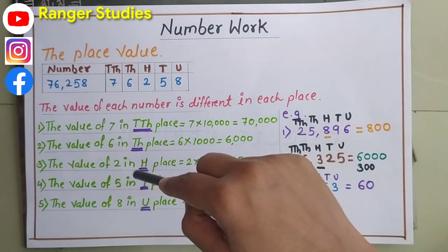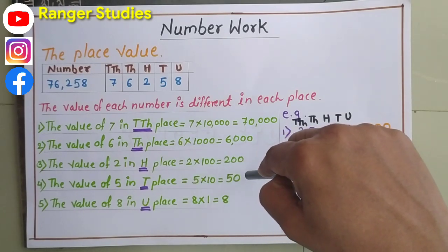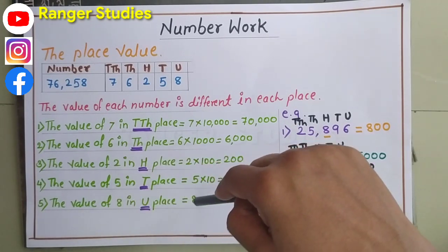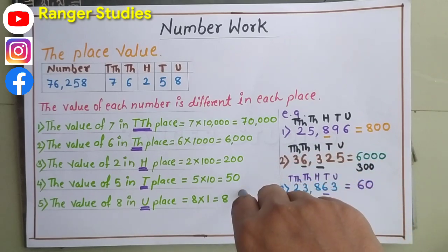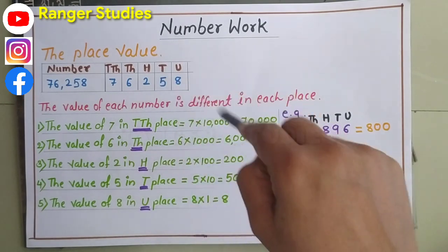The value of 5 in ten place, 5 multiplied by 10, we get 50. The value of 8 in unit place, 8 multiplied by 1 equals 8. These are the place values of each digit.